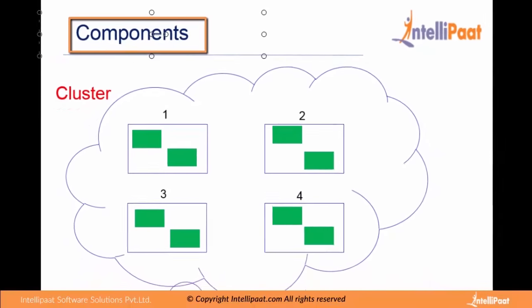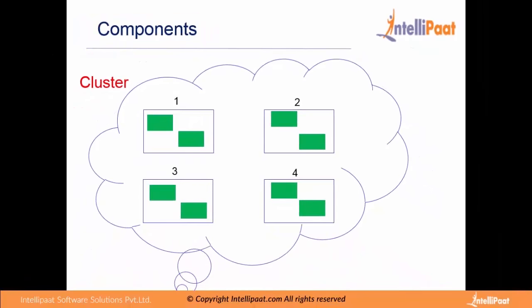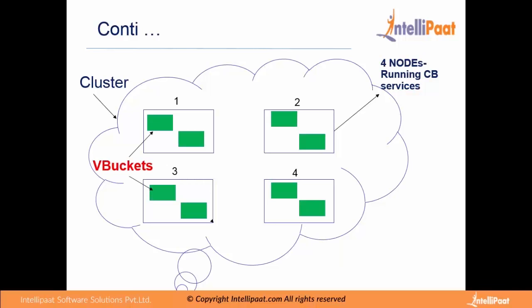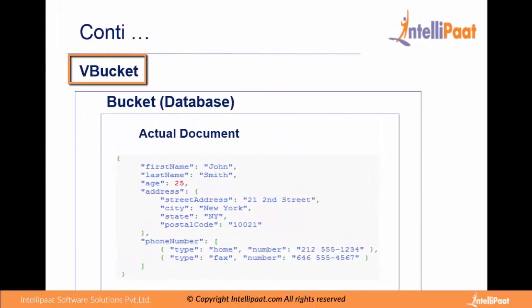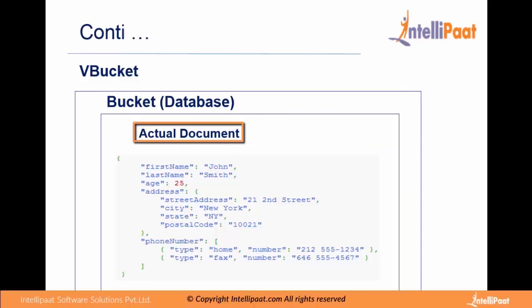Let us see what are the components inside Cloudspace. On the screen you can see a cluster will have some defined number of nodes. Each of these nodes will run Cloudspace services. Inside each node we will have Vbuckets, which are nothing but partitions. These Vbuckets are assigned to a bucket. You can consider a bucket as a database, and the actual document resides in the bucket with key-value pairs of data.